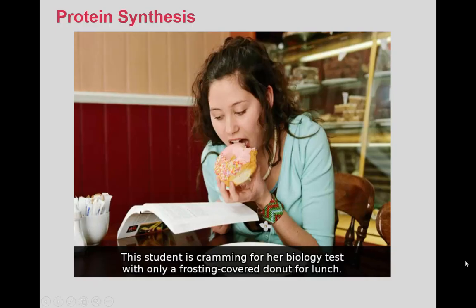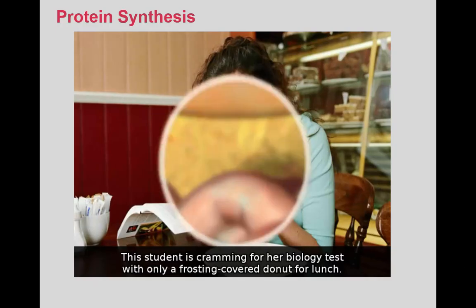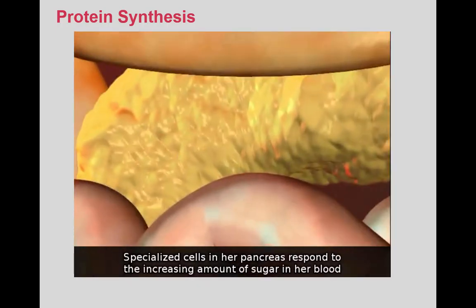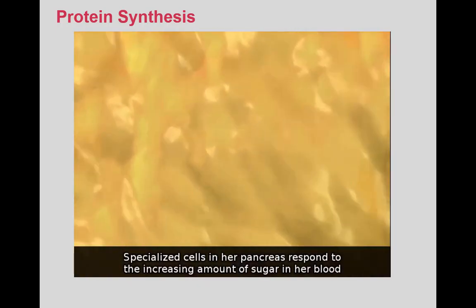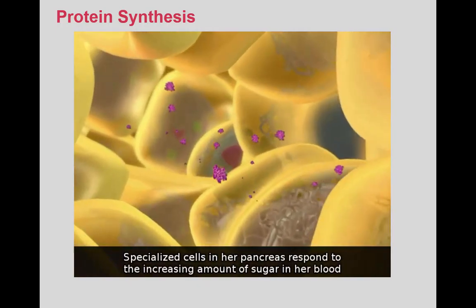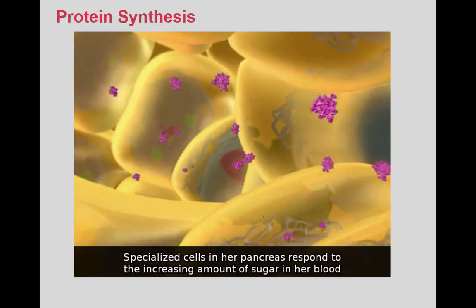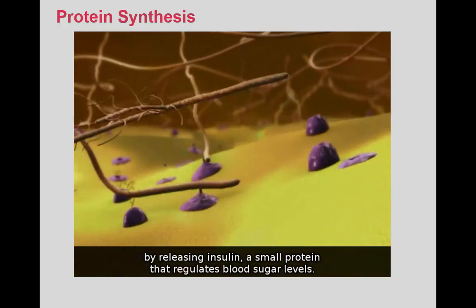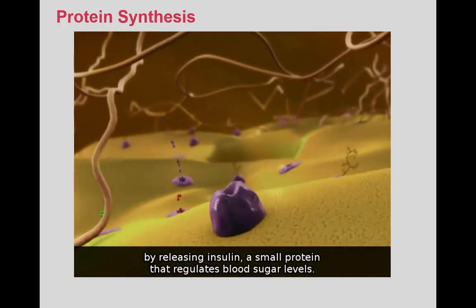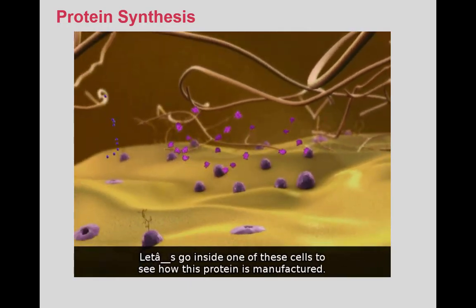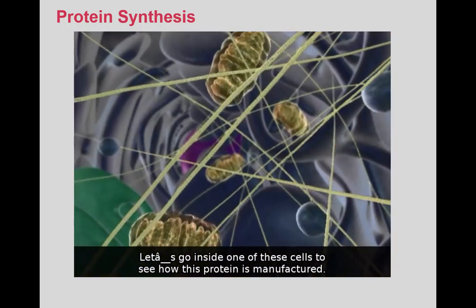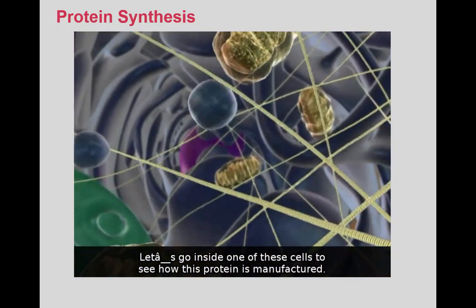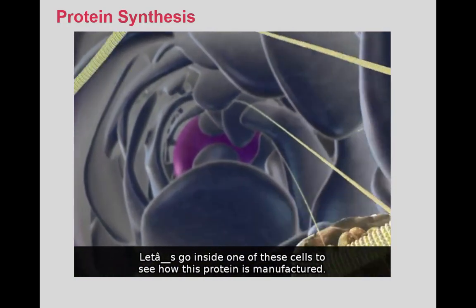This student is cramming for her biology test with only a frosting-covered doughnut for lunch. Specialized cells in her pancreas respond to the increasing amount of sugar in her blood by releasing insulin, a small protein that regulates blood sugar levels. Let's go inside one of these cells to see how this protein is manufactured.